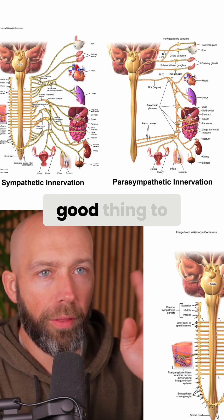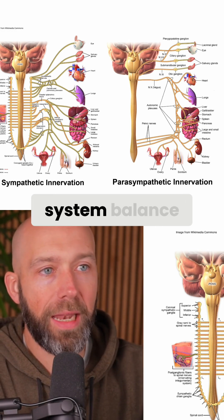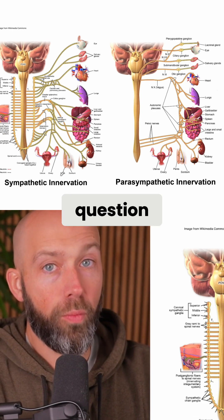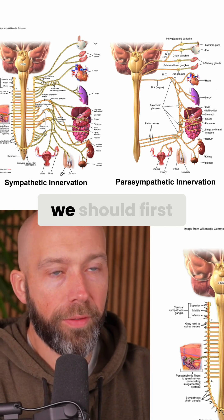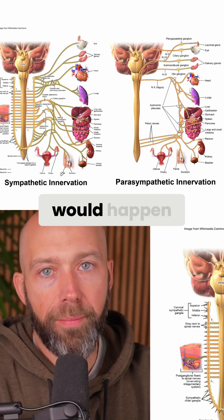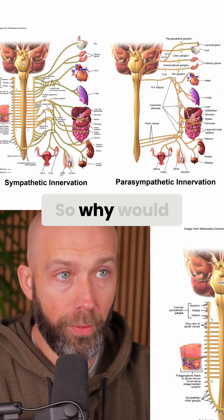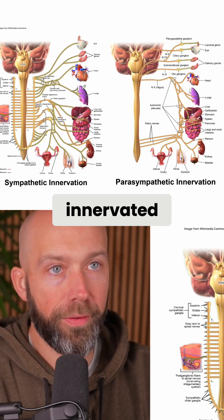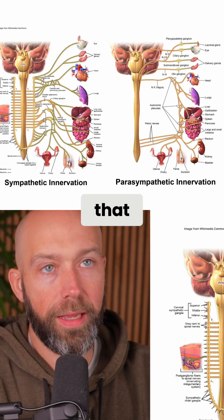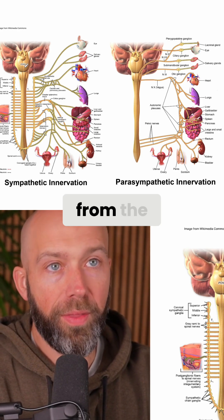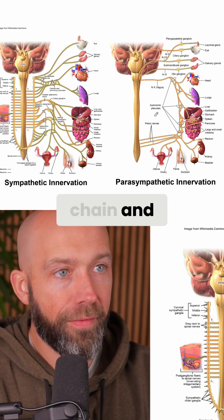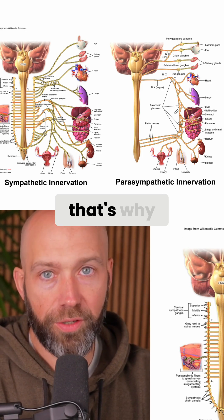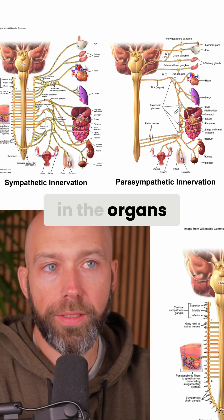This is a really good thing to know when it comes to nervous system balance, autonomic balance — to understand: if you ask the question, what is happening in the organs? We should first know why anything would happen in the organs at all. It is because every organ is innervated, meaning there is a nerve going from the sympathetic chain and from the parasympathetic chain to each of these organs. That's why anything would happen in the organs at all.